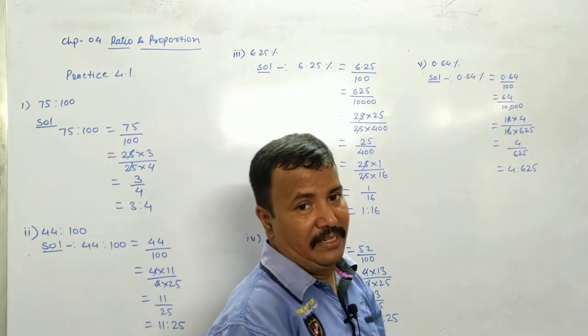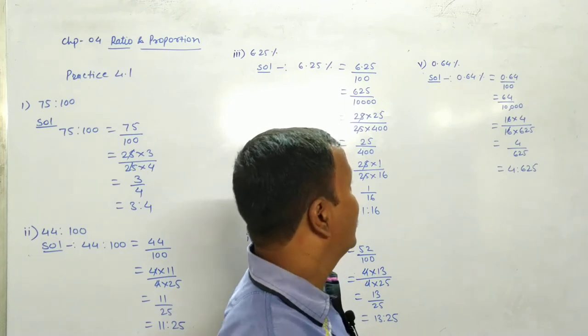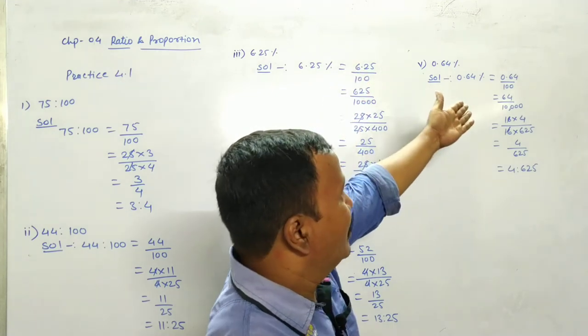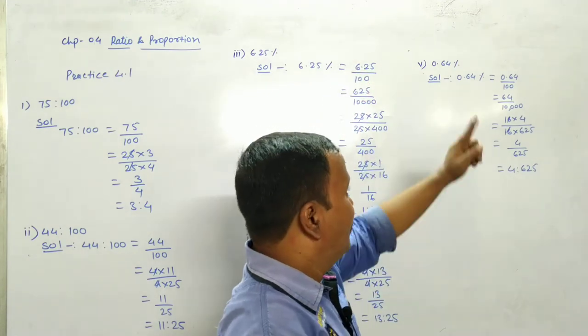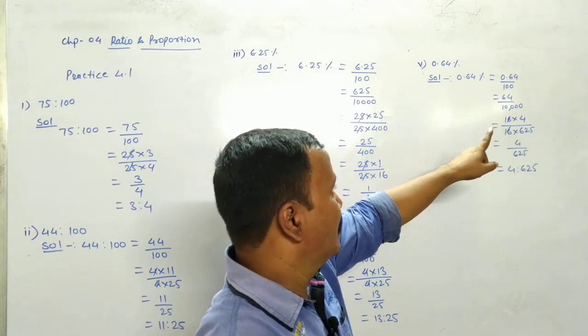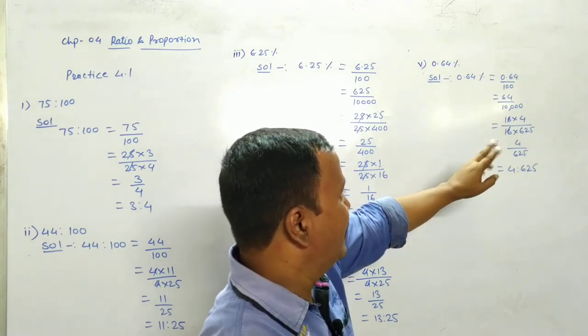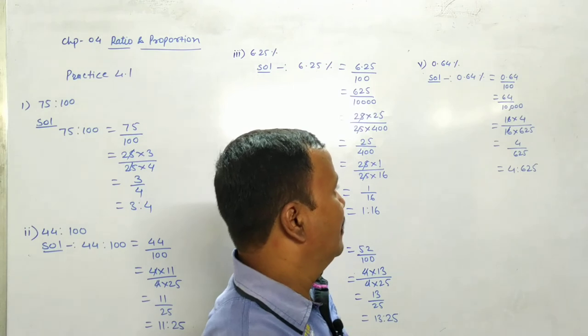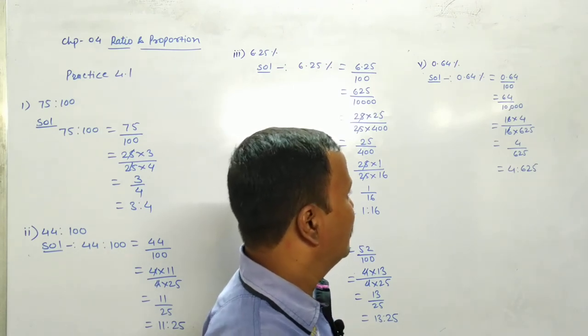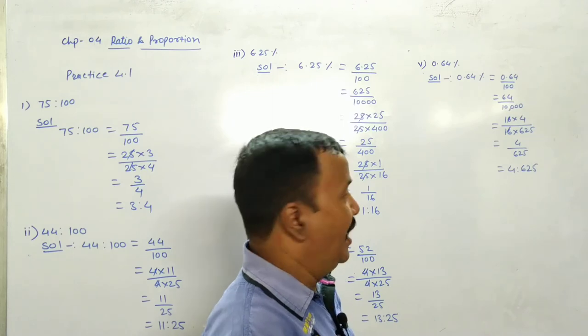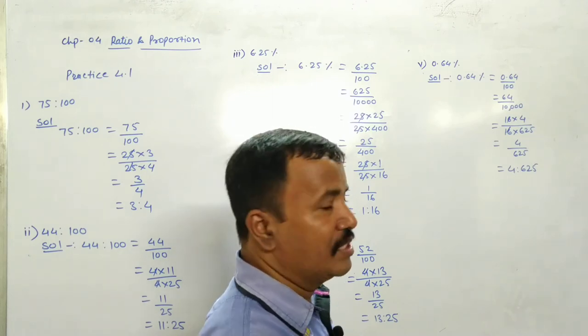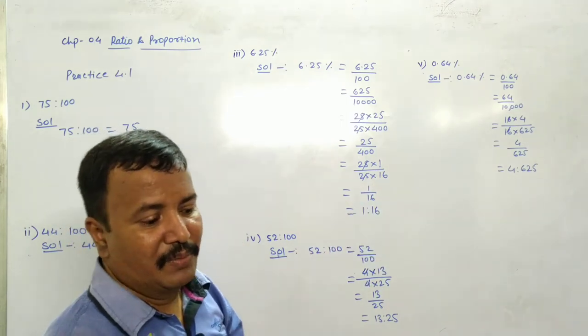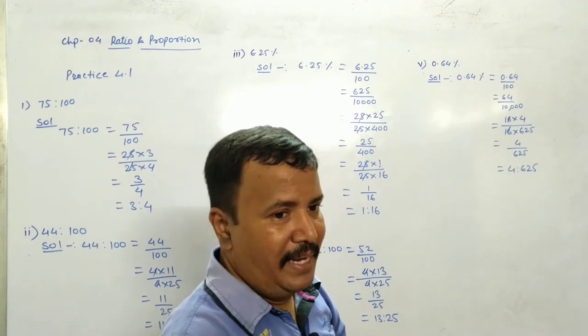Last is 0.64 percent. 0.64 percent again. Convert by multiplying by 100 in numerator and denominator. 64 divided by 10,000. 16 fours are 64. 16 into 625. 16 16 cancel. Answer is 4 upon 625. And ratio is 4 ratio 625. If tables you know, then you can solve quickly. Which table to multiply with.